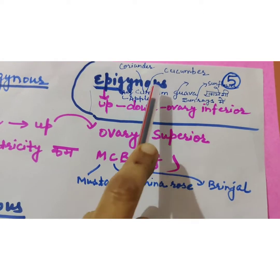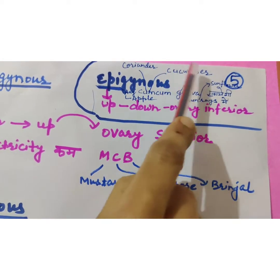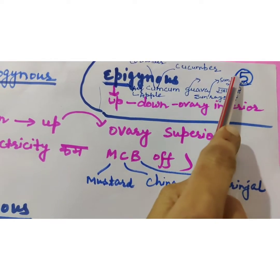Aaj apple, kumkum, coriander, cucumber, guava, sunrace, sunflower.